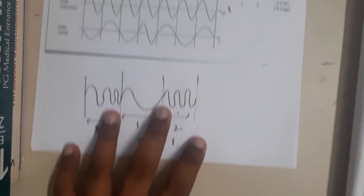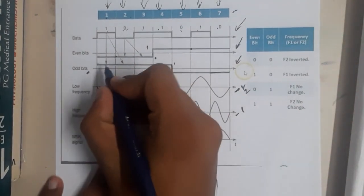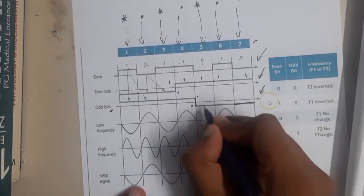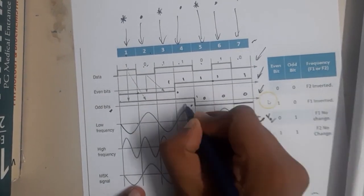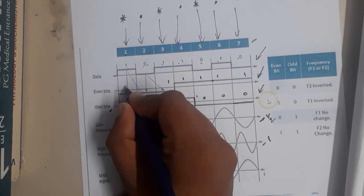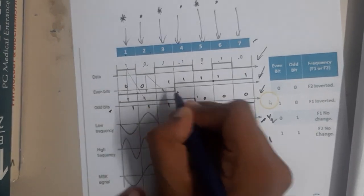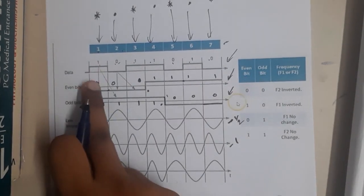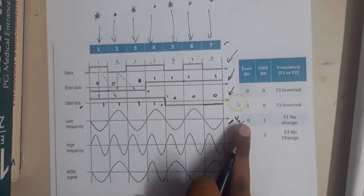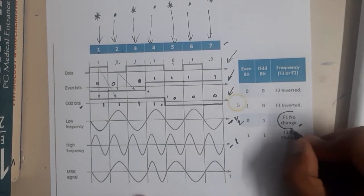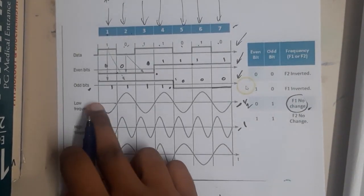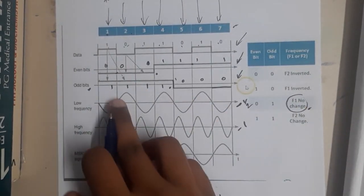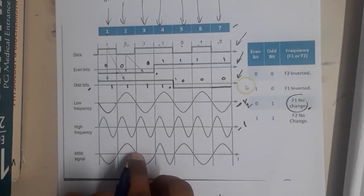Let me write the values here. The sequence is: one-one-one-one, zero-zero-zero, one-one-one-one, zero-zero-zero. Observing the even-odd pairs — for zero-one, there is no change to f1, so we draw the f1 down curve as-is. Similarly the next zero-one pair: f1 no change, so draw f1 in the same down-curve way.